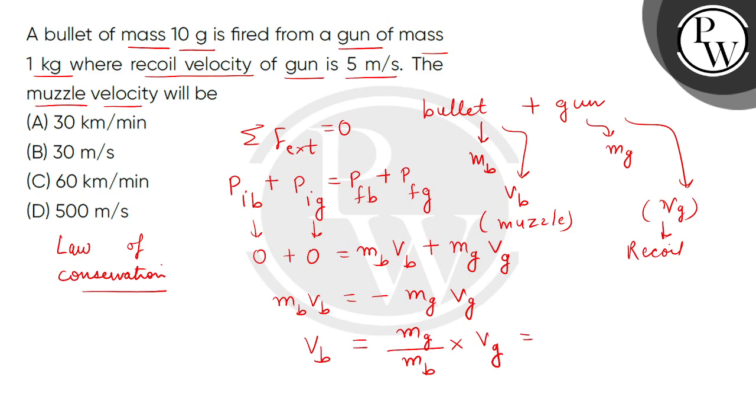So, children, here we can put values, mass of gun is 1 kg, mass of bullet is 10 gram, so we can convert it into kg. So, here we can divide by 1000, and velocity of gun is 5. So, this is 5000 divided by 10. It means this will be 500 meter per second.